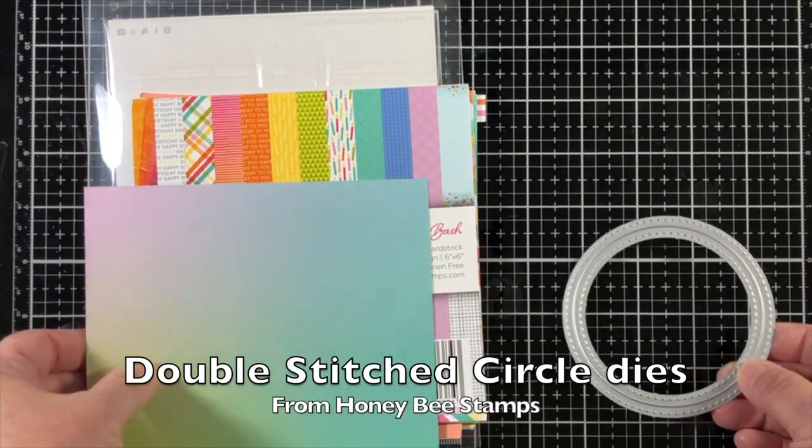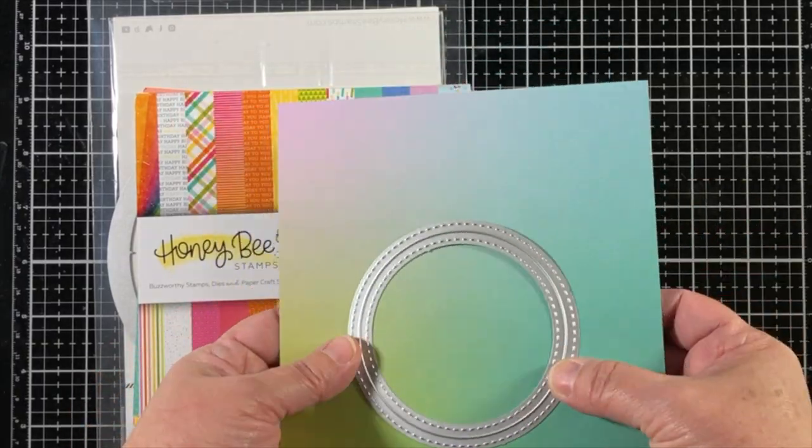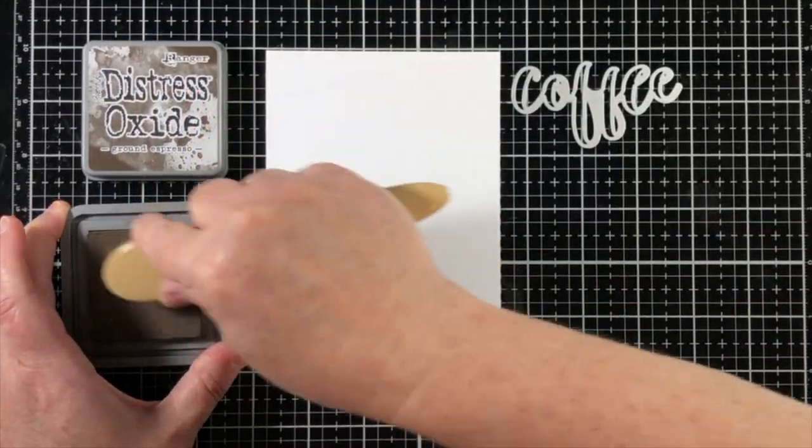I'll also be using some items from my craft supply, which is the birthday bash paper pad as you can see here, and a circle die.